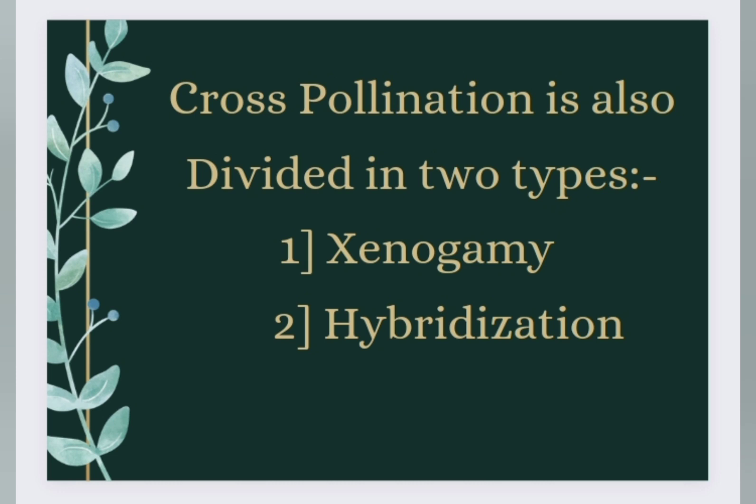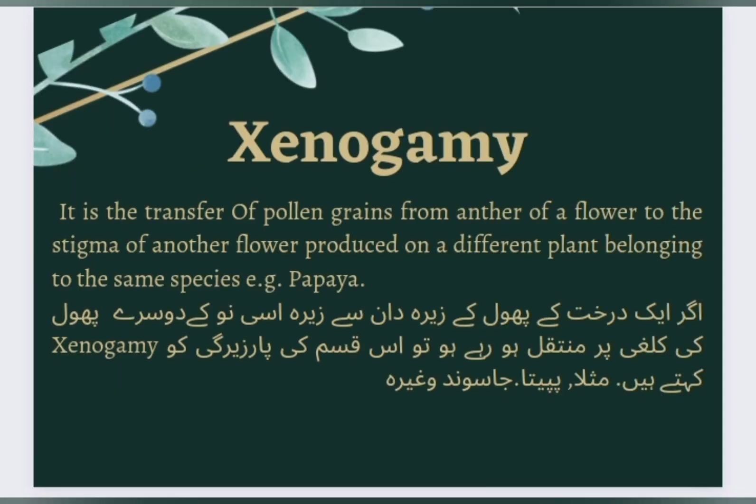جب کسی پھول کے جیرے دان سے جیرا دوسرے درخت پر موجود پھول کی کلغی پر منتقل ہو تو اسے پار جیرگی Cross-Pollination کہتے ہیں۔ Cross-Pollination is also divided into two types: First, Xenogamy, and Second, Hybridization. Xenogamy is the transfer of pollen grains from the anther of a flower to the stigma of another flower produced on a different plant belonging to the same species. Example: Papaya.